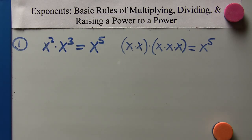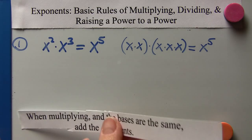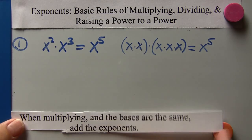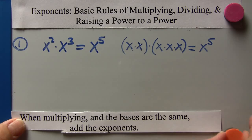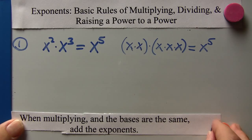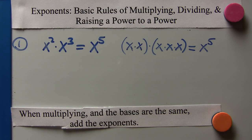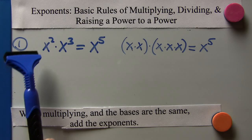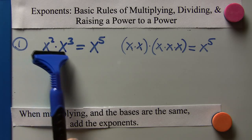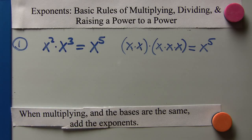Very basically, when you're multiplying two monomials and the bases are the same — meaning the variables are the same — you add the exponents.